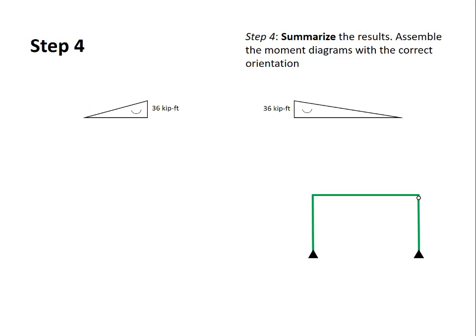Step four is to summarize the results. We want to reassemble the moment diagrams with the correct orientation. And this is a good moment to point out that I'm showing my moment diagrams not as positive or negative but I'm showing them with the actual curvature that the beam has. So positive curvature is concave up, negative curvature is concave down, but that applies to beams that are oriented horizontally.